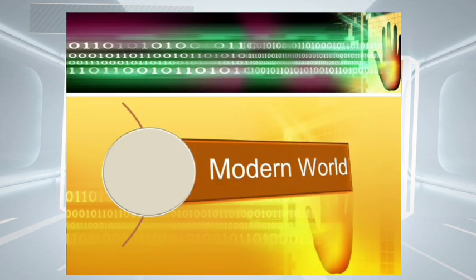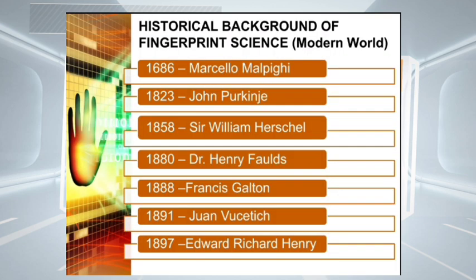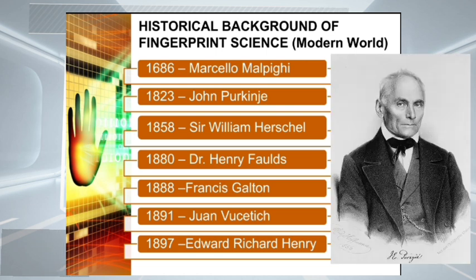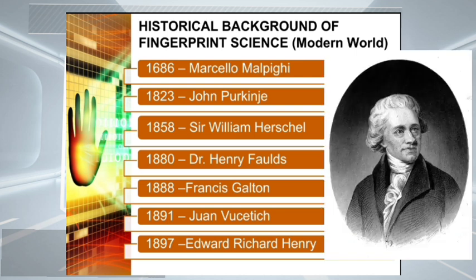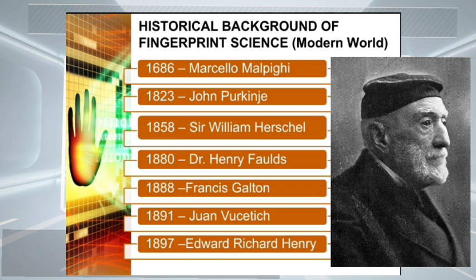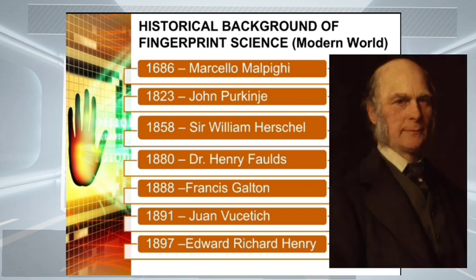Now let's proceed with the historical background of fingerprint science in the modern world. First, in 1686, Marcello Malpighi noticed the ridges, spirals, and loops. In 1823, John Purkinje published a discussion of the nine fingerprint patterns. In 1858, Sir William Herschel required Indians to sign contracts with handprints and later with fingerprints. In 1880, Dr. Henry Folds recognized the importance of fingerprints as a means of identification.